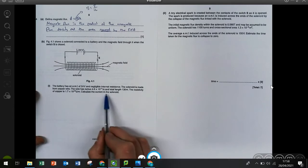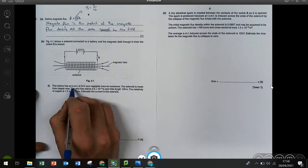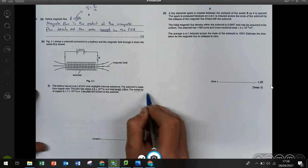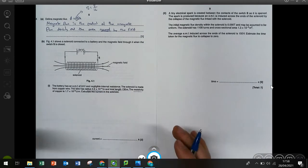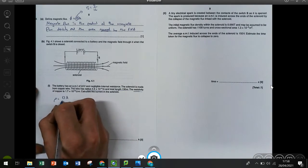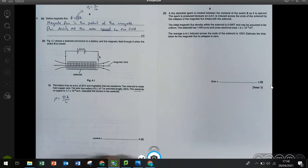Part B, it says calculate the current in the solenoid and they've given us lots of information. They've given us EMF, total length, radius and resistivity. Whenever I see resistivity, it basically always means use the resistivity formula in some way. So this was my starting point.